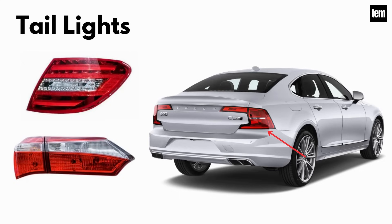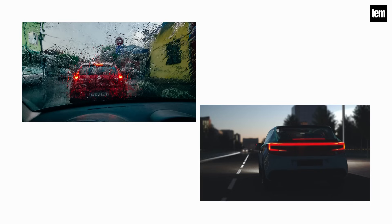Tail lights. The tail lights are mounted to the rear of the car above the bumper and are important for the safety aspect of the vehicle. These lights allow your vehicle to be seen during low visibility conditions and alert other drivers that you are slowing down. On most vehicles, the tail light is red.